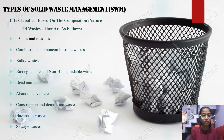The types of solid waste are classified based on the composition and nature of waste. They include: ashes and residues, combustible and non-combustible waste, bulky waste, biodegradable and non-biodegradable waste, dead animals, abandoned vehicles, construction and demolition waste, and sewage waste.